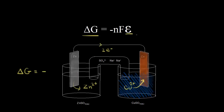E represents our cell potential or cell voltage, and this is easy to measure — just hook up a voltmeter. For this cell, the cell potential is positive 1.10 volts. Next, N represents the moles of electrons that are transferred in the redox reaction. In this example, two moles of electrons are transferred in our redox reaction.